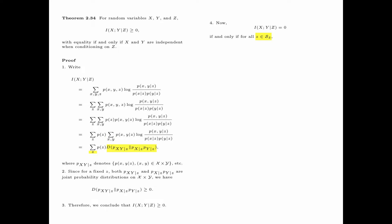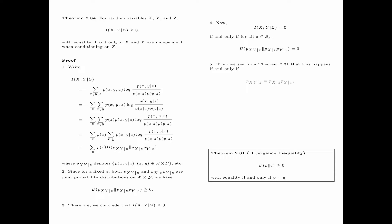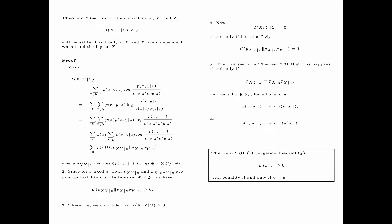The mutual information between X and Y conditioning on Z equals zero if and only if, for all Z in the support of Z, the corresponding divergence is equal to zero. From Theorem 2.31, this happens if and only if p(X,Y|z) equals p(X|z) times p(Y|z) for all z in the support of Z and for all X and Y — that is, p(X,Y,Z) equals p(X,Z) times p(Y|z) — which is the condition for X and Y being independent conditioning on Z, proving the theorem.